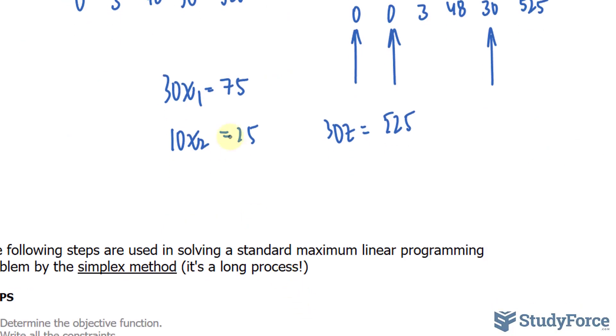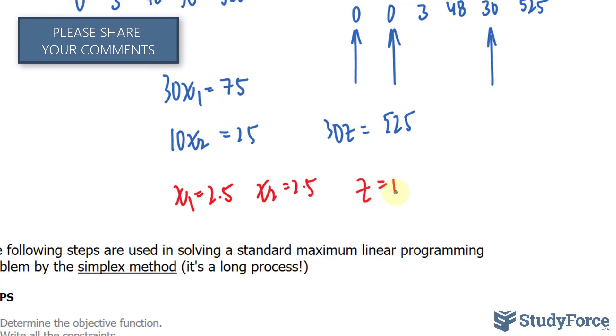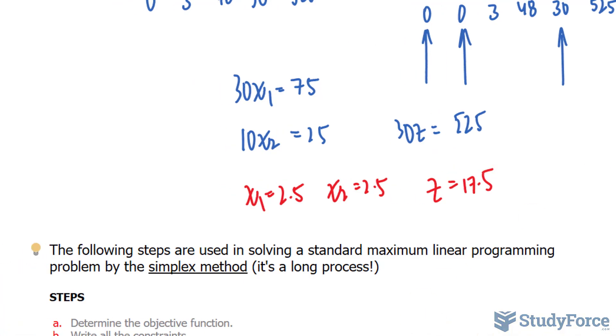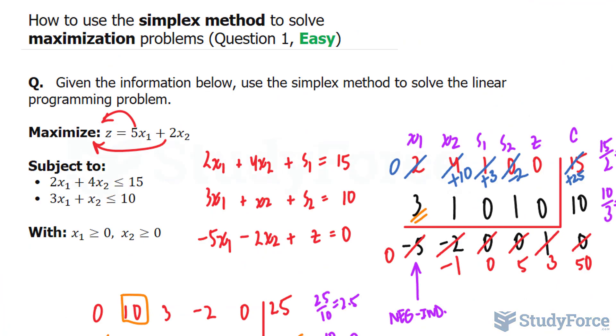Let's go ahead and find out what this is. 75 divided by 30 should give you 2.5, so x sub 1 is 2.5. Dividing these two, x sub 2 should give you also 2.5, and dividing these two should give you 17.5. So let's interpret what we just found. The solution x sub 1 is equal to 2.5, x sub 2 being 2.5, s1 being equal to 0, s2 being equal to 0, and z being equal to 17.5 will give us the optimal solution. And there you have it. That is how to use the simplex method to solve maximization problems.